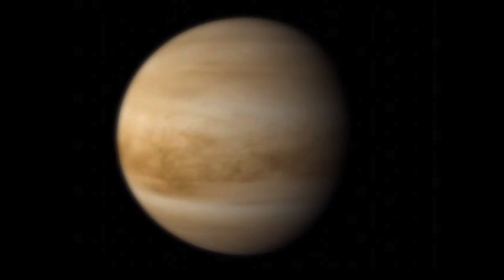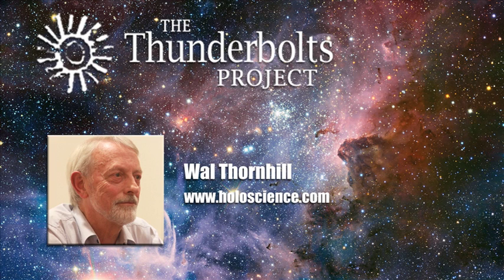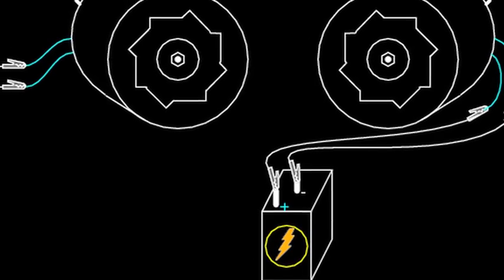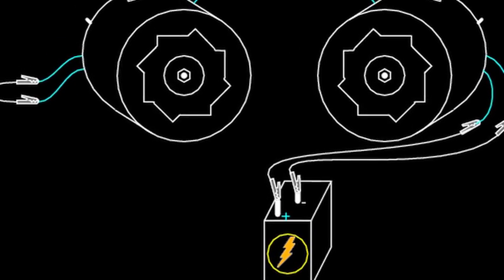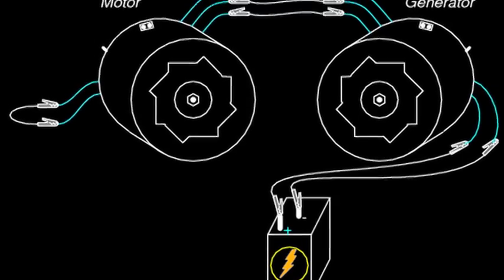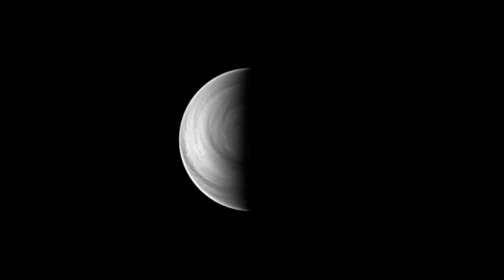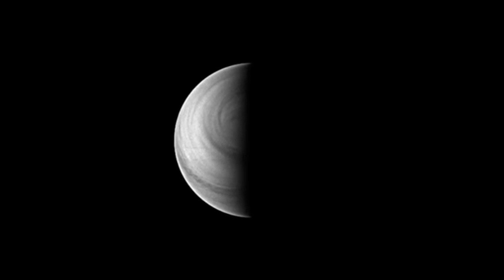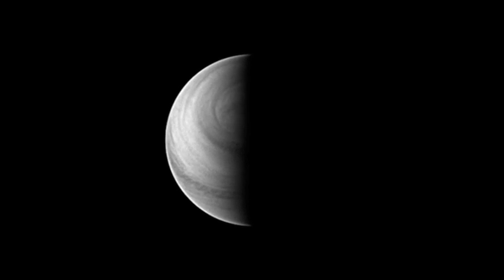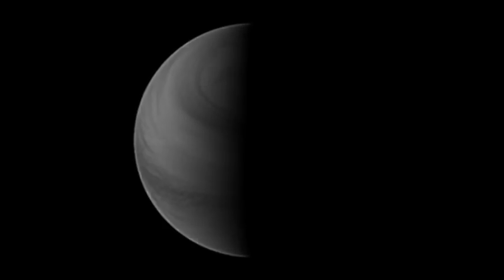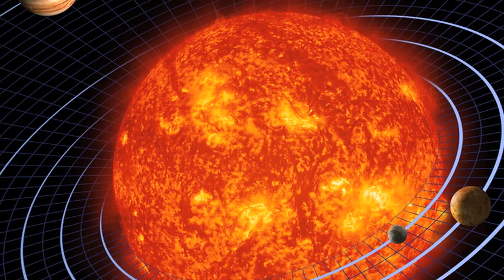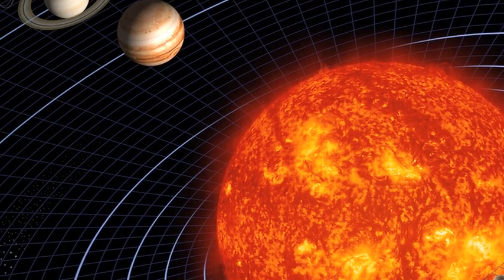In the Electric Universe model of the solar system, there is an input to all of the planets which goes unrecognized by atmospheric scientists, and that is the electrical input from the Sun's circuit. When you have electricity being fed into a circuit, it can drive motors and cause rotation. In the case of Venus, it's obvious that something is driving that atmosphere 60 times faster than the planet, and it's not coming from inside the planet, even though it is super hot. And it's not coming from the Sun.